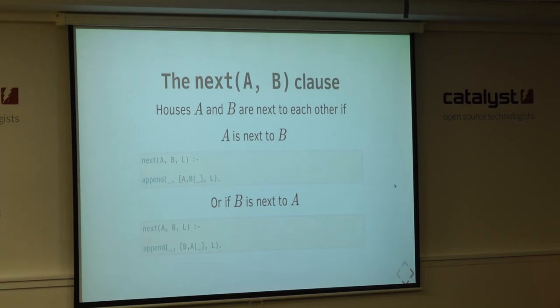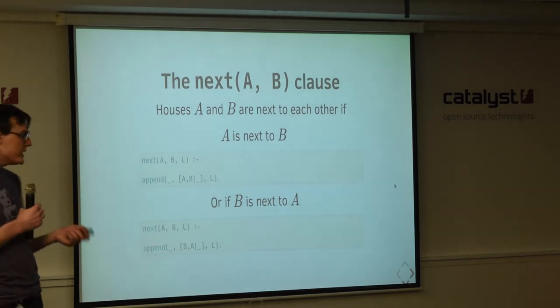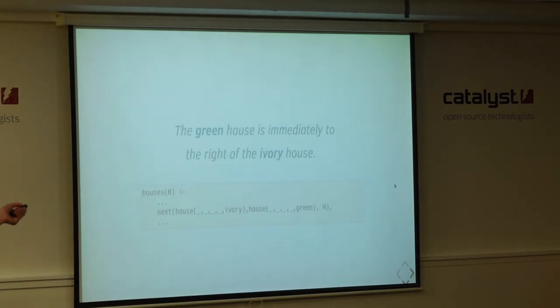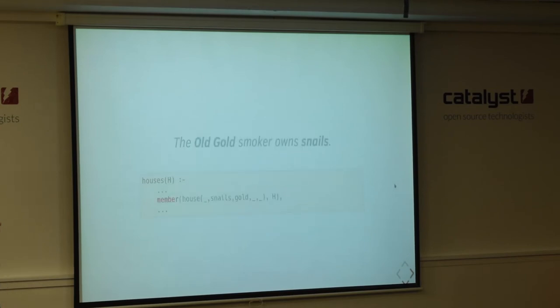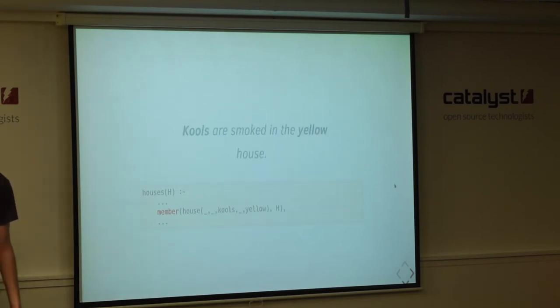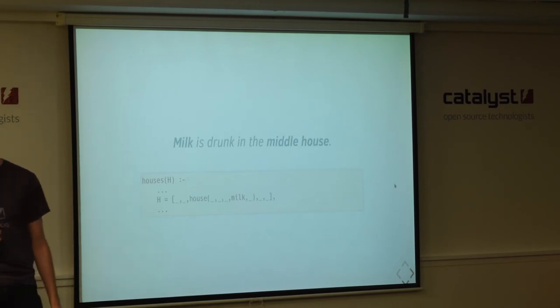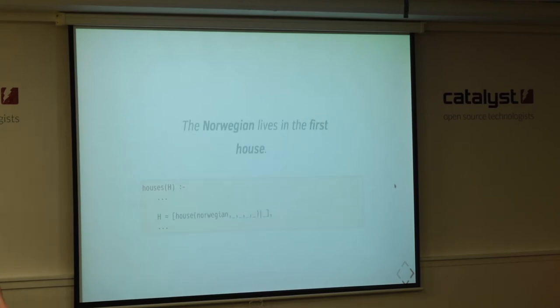So, I'll provide the source code. So, you can look over it in your own time because Lord knows it took me hours and hours to try and reverse engineer this. But my indentation's gone. But we have a rule that houses next door to each other if two houses A and B are next door to each other if A is next to B or if B is next to A. So, we can use our next rule to say a house, the ivory house is to the right of the green house. The old gold smoker owns snails. Coors are smoked in the yellow house. The milk is drunk in the middle house.